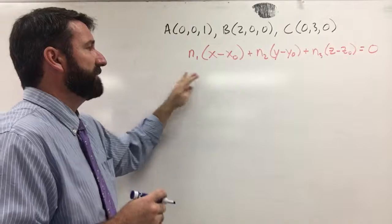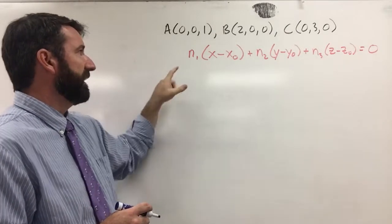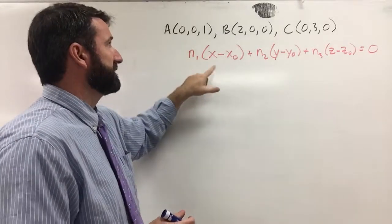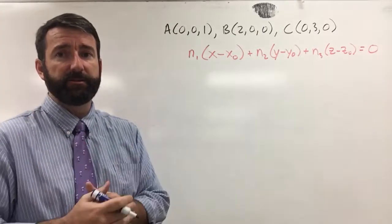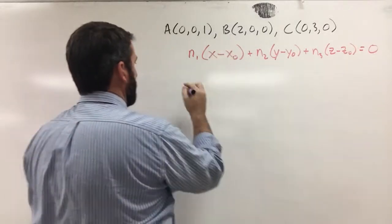Alright, so the first thing to do is to find a vector that's normal to this plane. So we need a couple of vectors that are on the plane to find the normal vector. So let's just use vector ab.